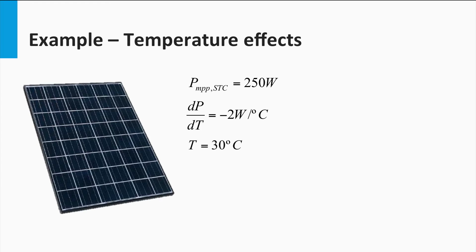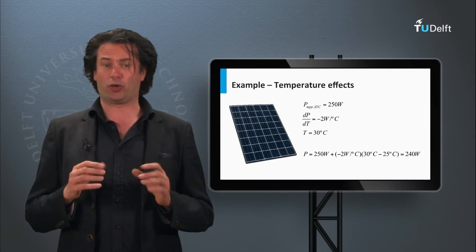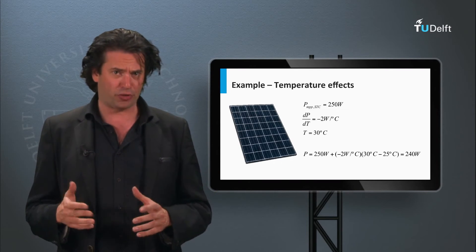Let's take a look at an example. If the maximum power output of a PV module under standard test conditions is 250 watts, and the temperature coefficient of power is minus 2 watts per degree Celsius, then the module's power output at a temperature of 30 degrees Celsius can be calculated as follows. The power is 250 watts plus minus 2 watts per degree, multiplied by the temperature difference 30 minus 25 degrees Celsius, which gives you 240 watts. As you can see, the sign of the temperature coefficient determines if the parameter is increasing or decreasing with temperature. In the exercises for this block you will be able to use this equation to estimate the effect of temperature on the various PV parameters.